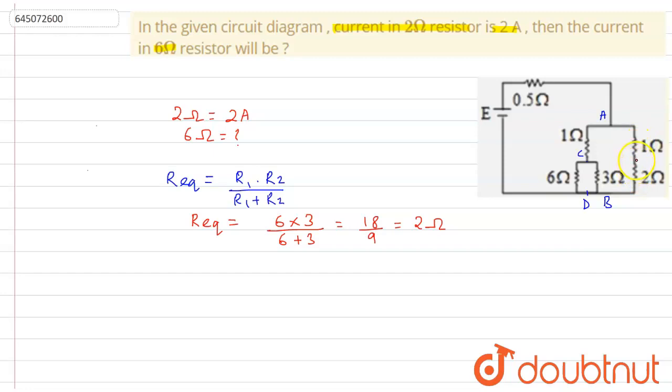So it is obviously flowing through the 1 ohm resistor also since they are connected in series. And when two resistances are connected in series, the same current passes through them.